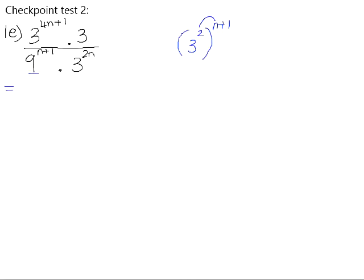When you raise a power to a power, you multiply the exponents, so you need to multiply the 2 by the n and the 2 by the positive 1. So that will leave us 3 to the 4n plus 1 multiplied by 3. Remember that the exponent on that is positive 1 if it's not filled in. And then in the denominator, we will have 3 to the 2n plus 2 times by 3 to the 2n.